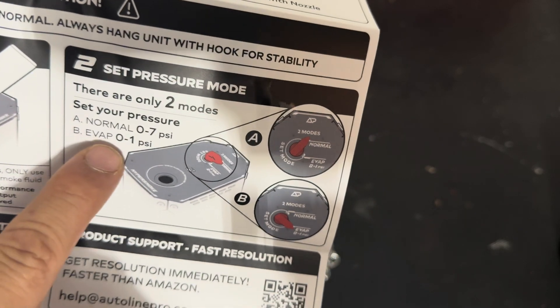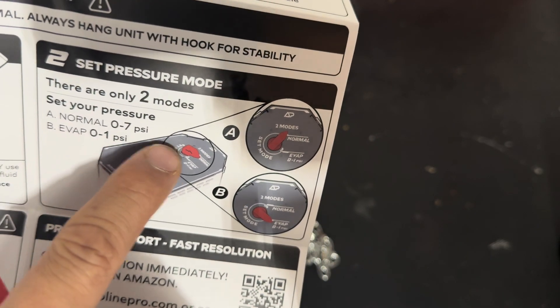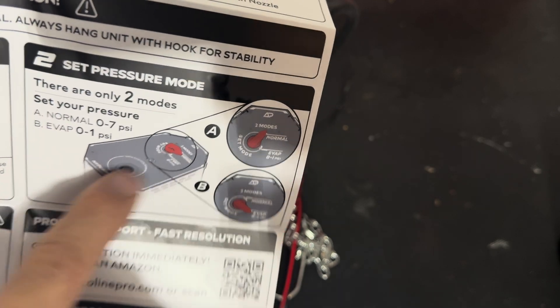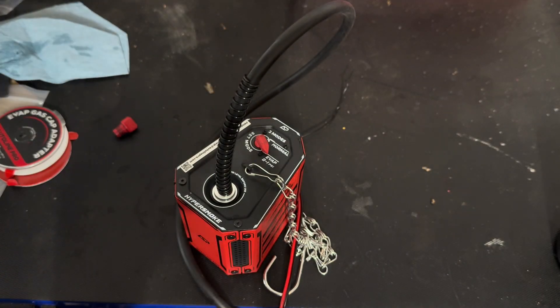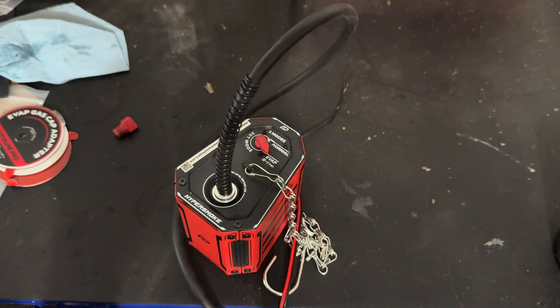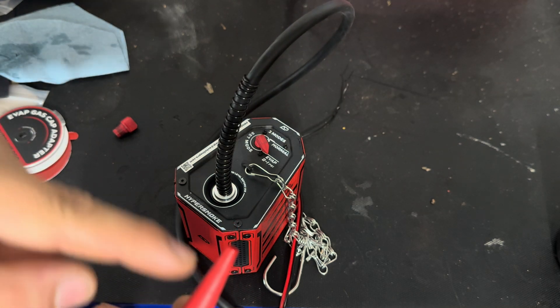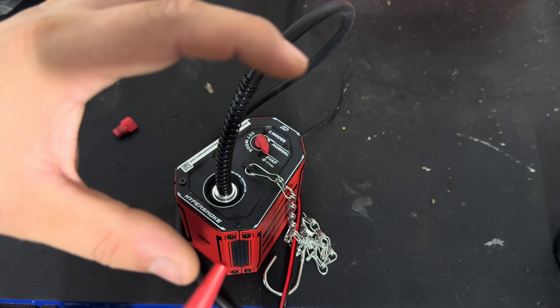Oh okay, so there are two modes right here. Normal is 0 to 7 PSI, and evap is 0 to 1 PSI. So yeah, I guess you can tell a little bit of the difference on the smoke, because you guys can see the smoke trail up to here.